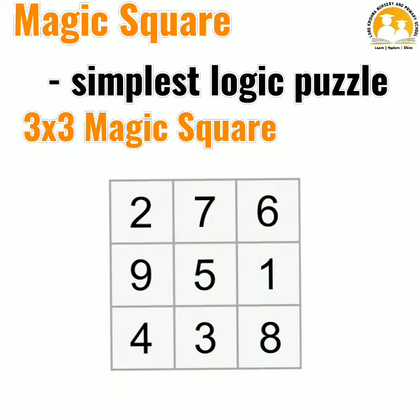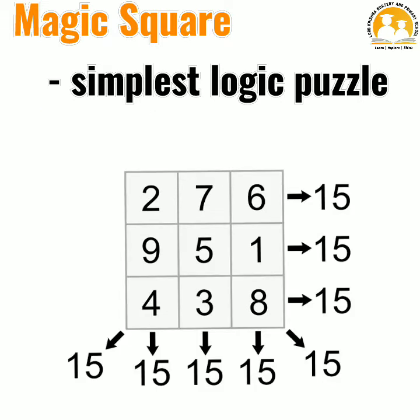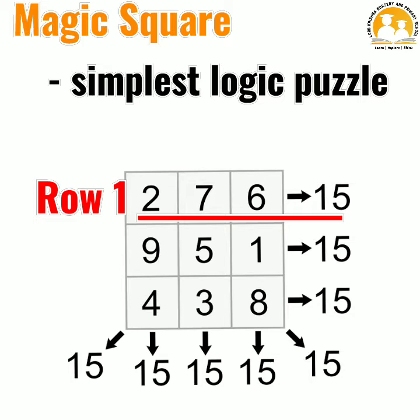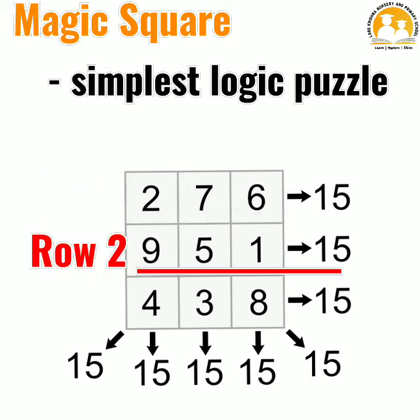In the magic square, numbers are filled in each cell. In a magic square, we calculate the numbers using logic. Adding all the numbers in row 1, I get 15. First row numbers add to 15. Second row numbers also add to 15.